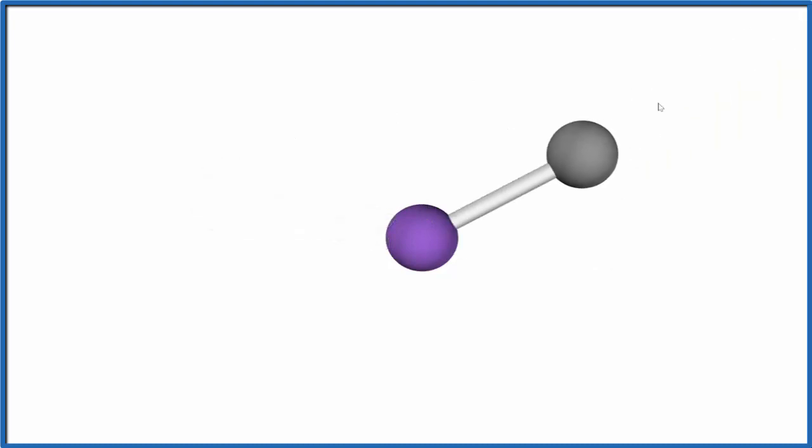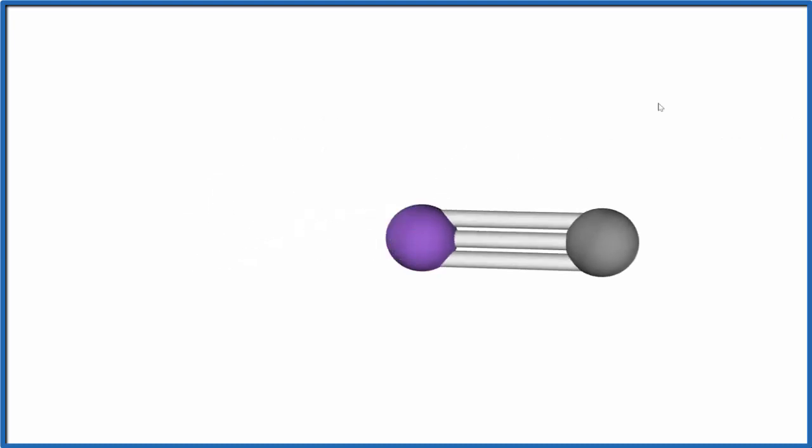If we had a single bond, it would still be linear, a straight line. And if we had a triple bond, it would still be linear. So it really doesn't matter.